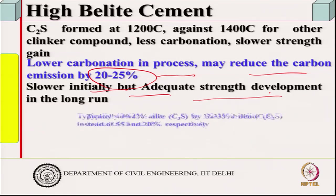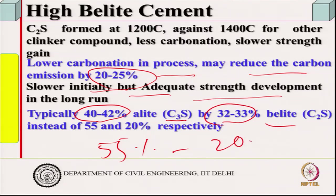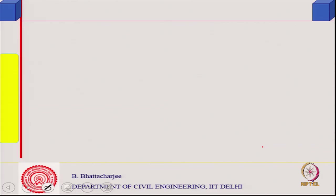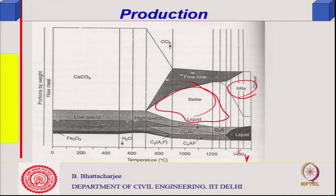This is illustrated by the phase diagram: alite (C₃S) forms at higher temperature, while belite (C₂S) forms at a lower temperature zone — so you do not need to go to such high temperatures. The lime saturation factor (LSF) for high belite cement is used at 78–83%, not the 95–98% used for ordinary Portland cement clinker. Reducing the lime saturation factor increases C₂S and decreases C₃S — and since less calcium carbonate is used, carbon dioxide evolution is reduced.